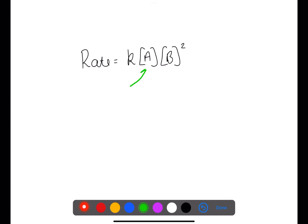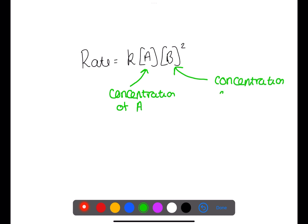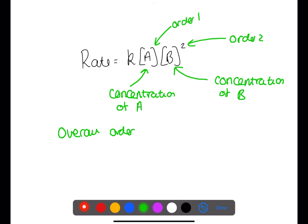Here is a rate equation. The rate equation shows you the concentration of reactant A and the concentration of reactant B. They've been raised to the powers of what we call orders. In this case, the order for A is 1 and the order for B is 2. These orders can only be calculated experimentally. To find the overall order for the reaction, you add together the orders of all of the reactants. In this case, the overall order is 3.